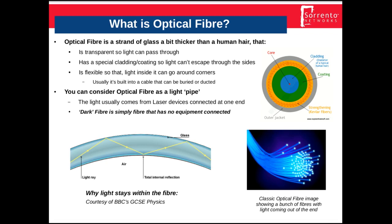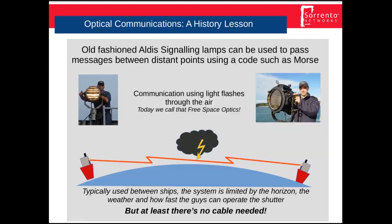Signals going in — optical signals going in at one end — are coming out of the other end. That gives the classic pinpoints of light picture that we see in the image here. We also saw that this is related to the old-fashioned Aldis lamp, where light is basically flashed on and off to signal Morse code between ships, through the air.